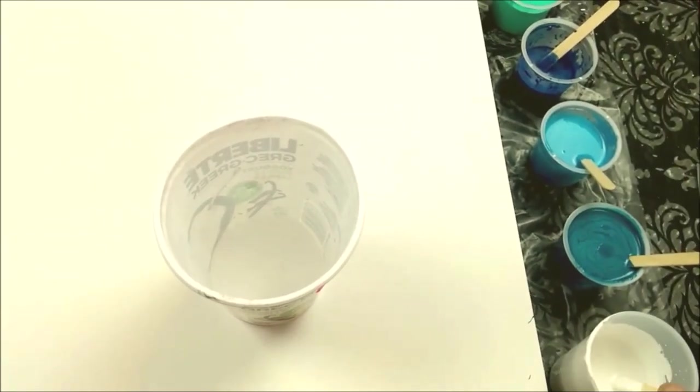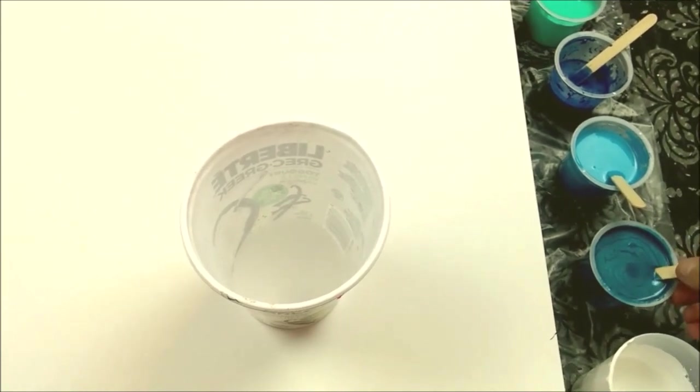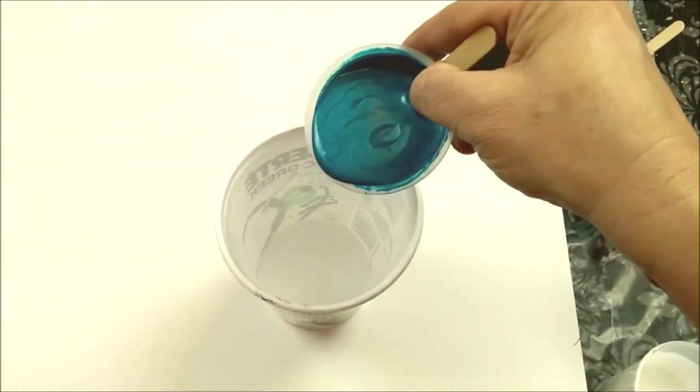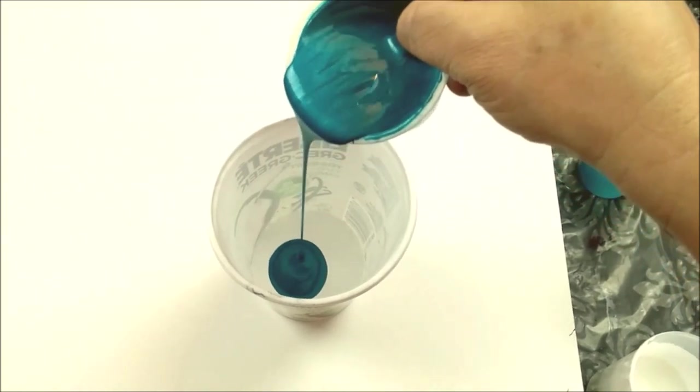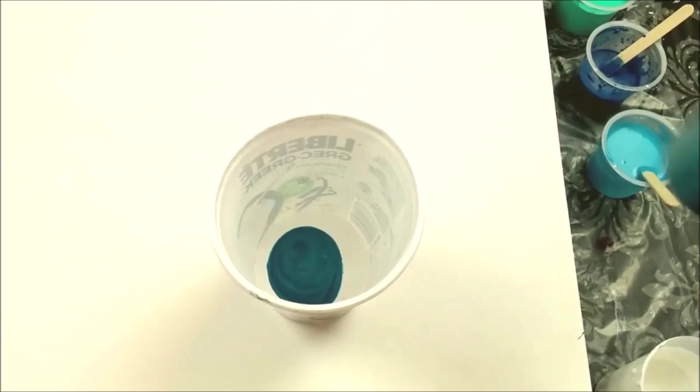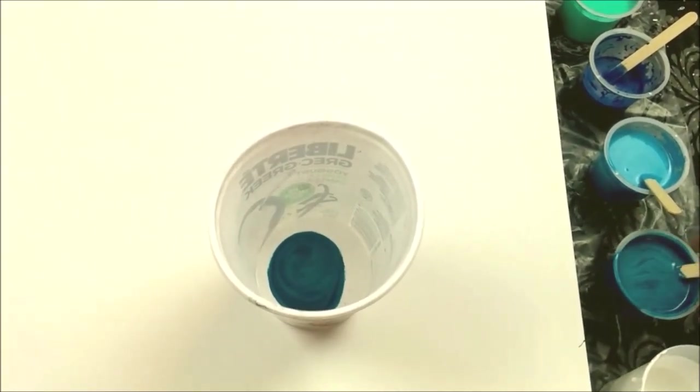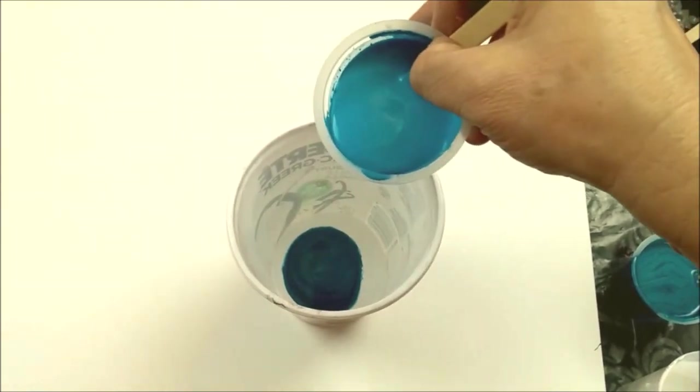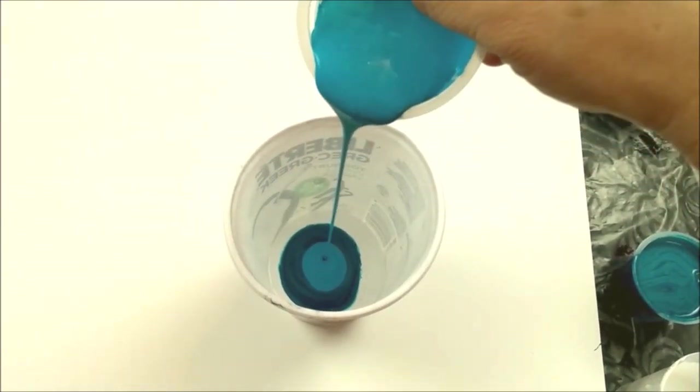I need about 14 to 16 ounces of paint so I'm going to start with the white. This is metallic cobalt blue with a little bit of silicone in it, and then we're going to go on to this blue which also has a little bit of silicone in it.